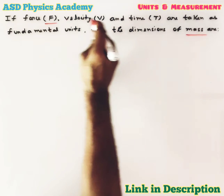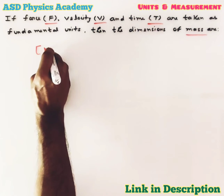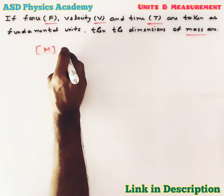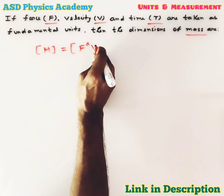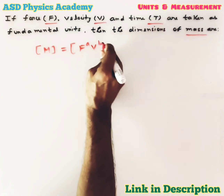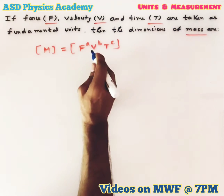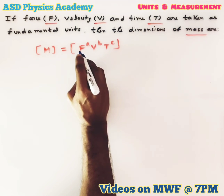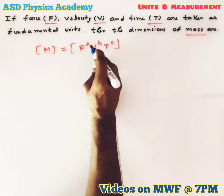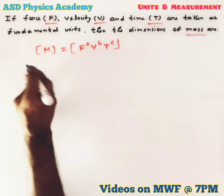Here in this question we have to write the dimensions of mass in terms of force F, velocity V, and time T. So we can write: let M depend upon F to the power A, V to the power B, and T to the power C. We will write the dimensional formula of force, velocity, and time to find out the values of A, B, and C.